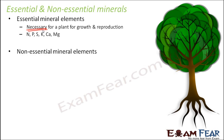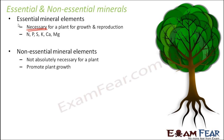The second category is non-essential mineral elements. If these elements are present, it is better, but even without them the plant can do on its own. So they are not absolutely necessary for a plant; however, they are good to have. They promote plant growth — notice the difference: for essential elements, they are necessary for plant growth, but for non-essential elements, they promote plant growth. Even if they are not there, and the essential mineral elements are present, the plants will still continue to grow.